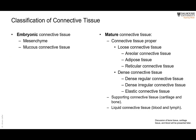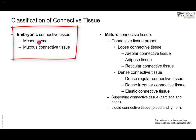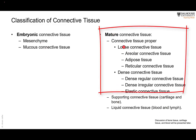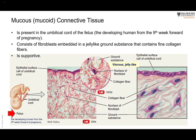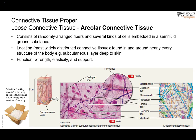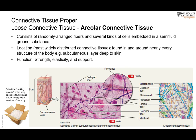Moving on to mature connective tissue proper: the first type is loose areolar connective tissue, which has collagen fibers arranged in multiple directions and a semi-fluid or gel-like matrix. It is present almost everywhere — like packing material, filling any space to protect and support. It is especially present in the subcutaneous tissue and part of the dermis.